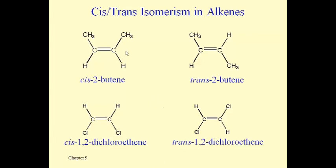Cis means that two groups are on the same side of the double bond — like these two methyl groups, or these two hydrogens, are cis relative to one another. In the trans isomer, the two methyl groups are on opposite sides of the double bond, and the two hydrogens are on opposite sides as well. The two 1,2-dichloroethenes have that same type of relationship, where the chlorines can be cis relative to each other — on the same side of the double bond — or those chlorines can be trans, with the hydrogens also trans.